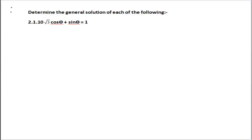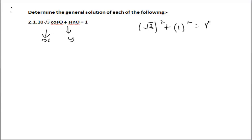In this next problem, they ask for the general solution. You'll notice cos θ and sin θ are in lowest form, but the coefficients give us a clue — one could be x and the other y. Using the radius concept, we get √3² + 1² = r², so r = 2.